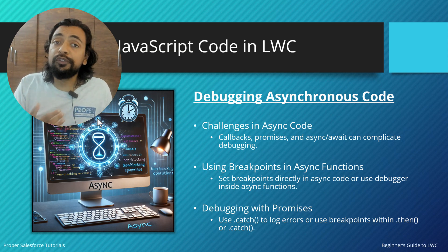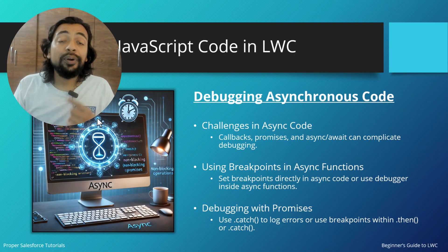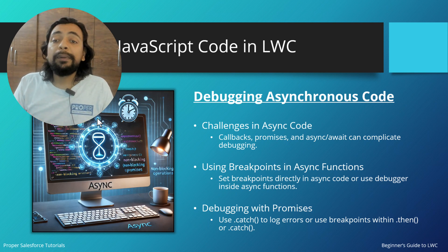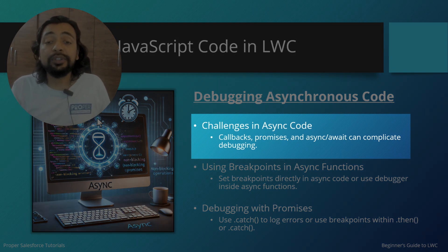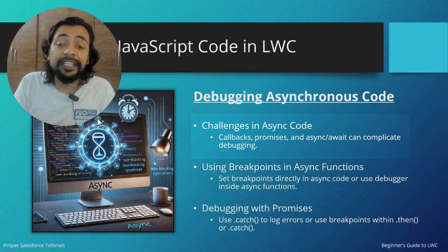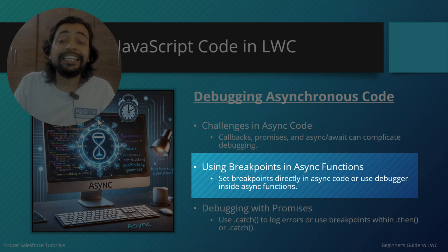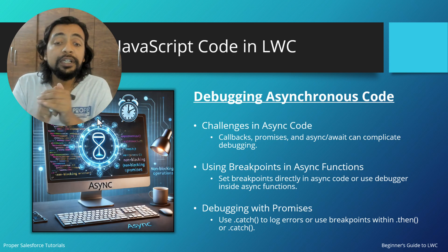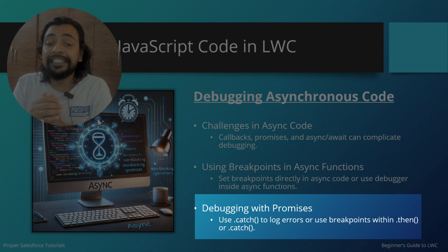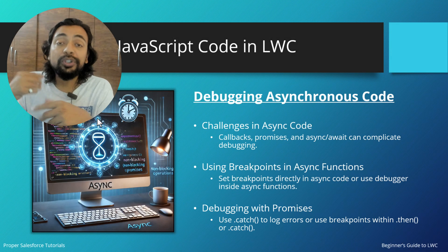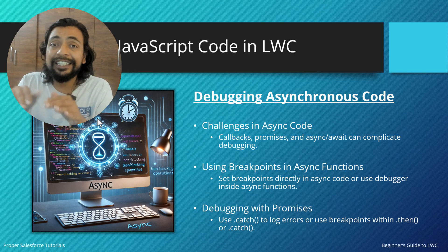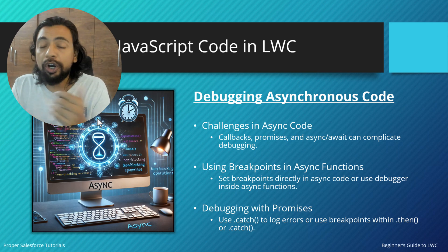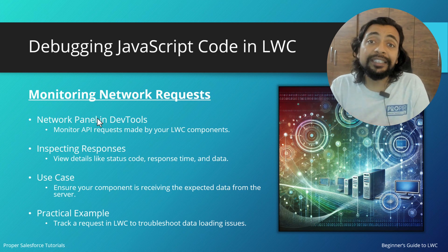Debugging asynchronous code: in async JavaScript we work with promises, async/await, and callbacks, which makes debugging more complex. The solution is to set breakpoints directly in async code or use the debugger statement inside async functions. When working with promises, use dot-catch to log errors, or set breakpoints within dot-then or dot-catch so execution stops when a promise is resolved or rejected.